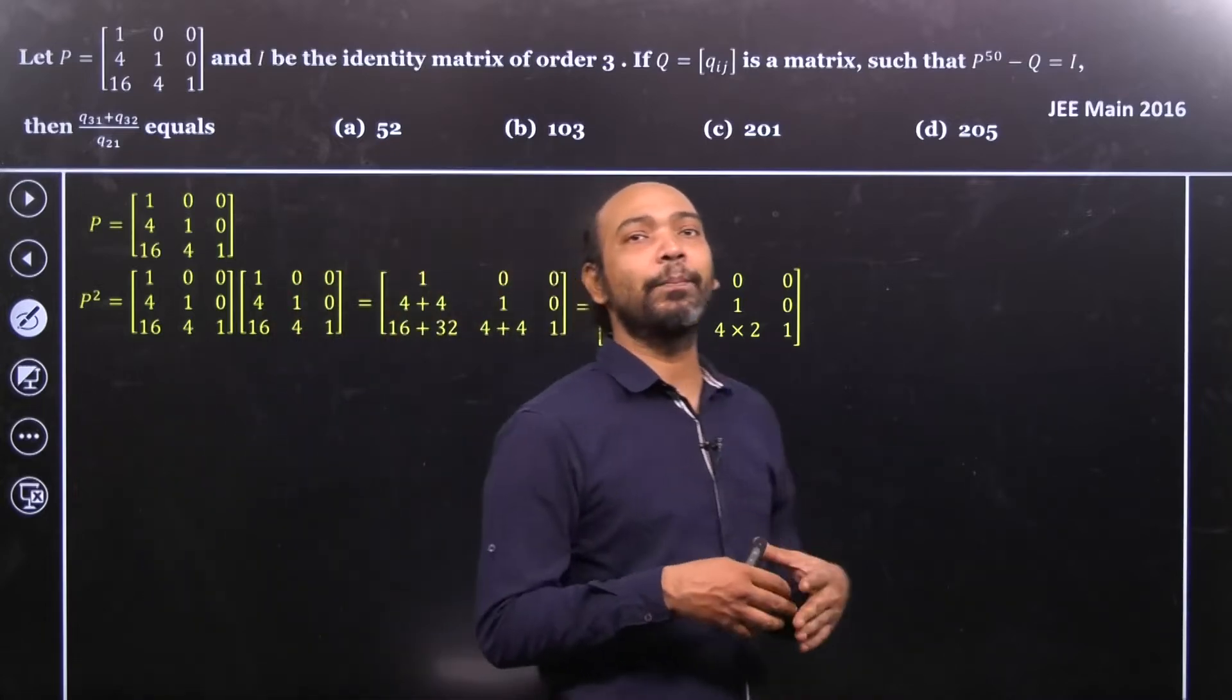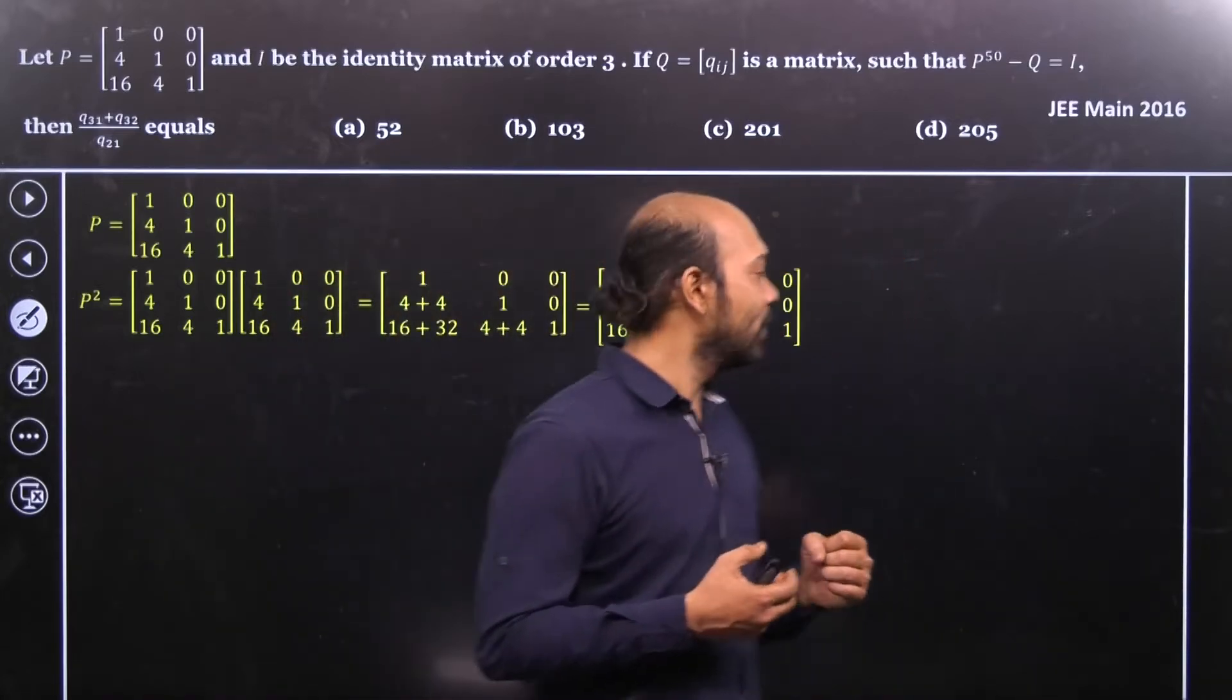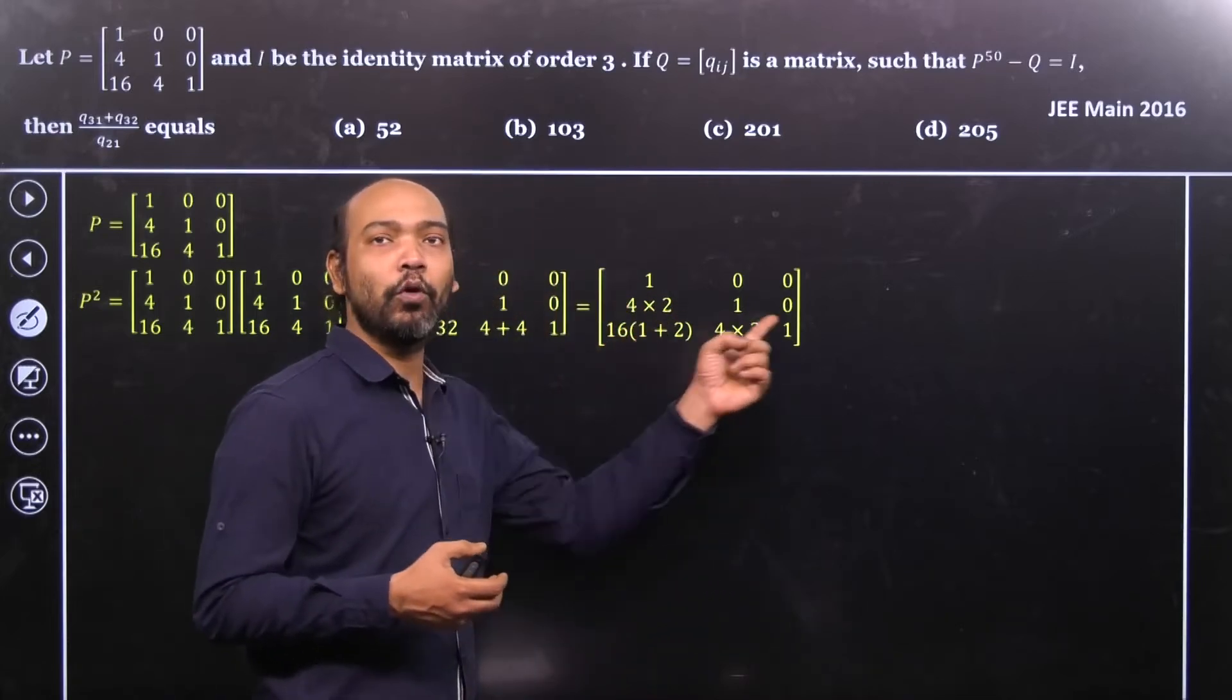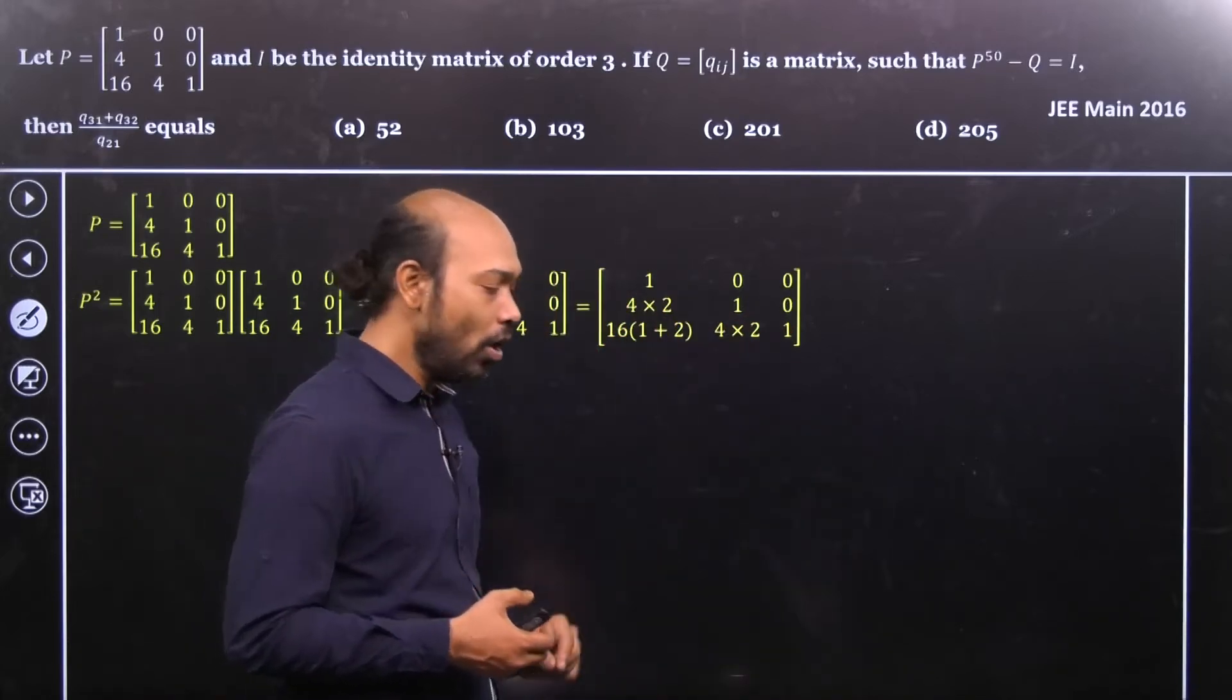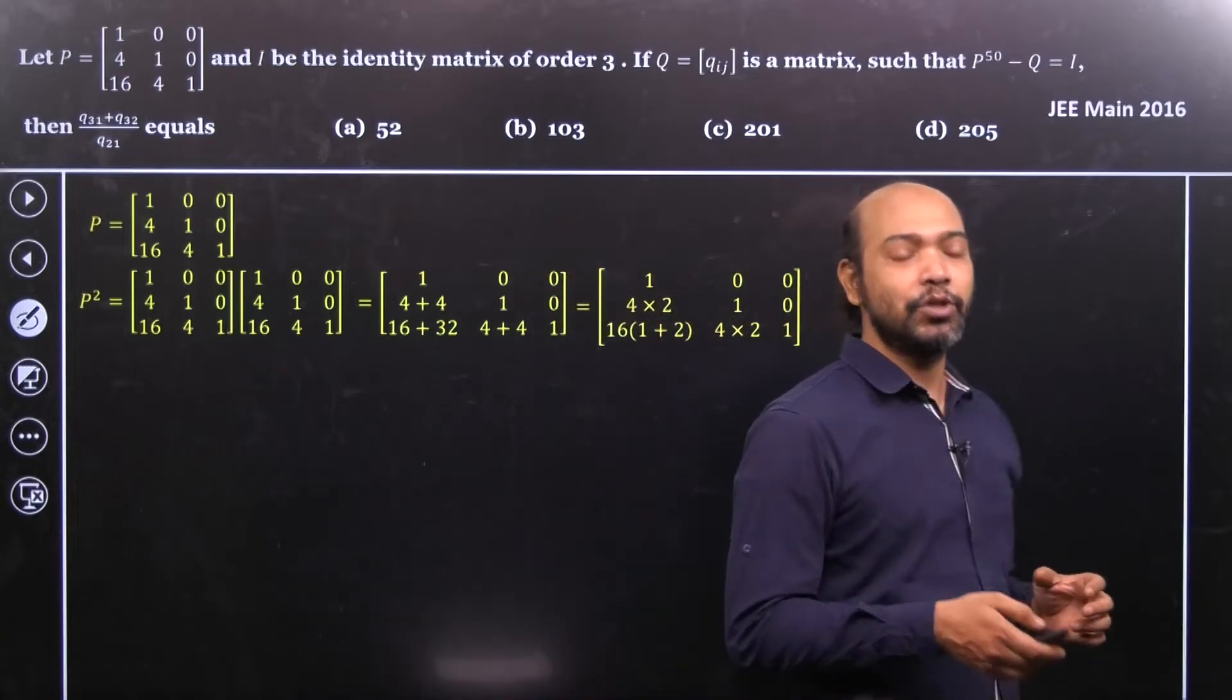That's it. So we can guess for the P cube, what's P cube? P cube must be that 4 cross 3, 4 cross 3, 16 into 1 plus 2 plus 3 and diagonals will be 1. Let's see that. Is it true for P square?